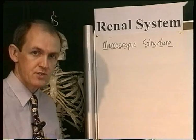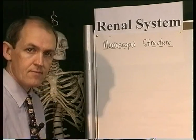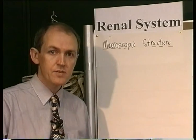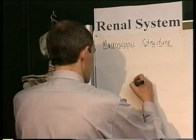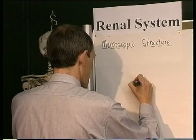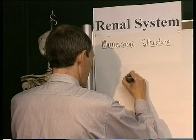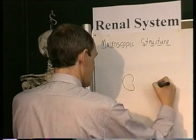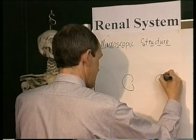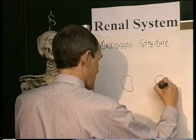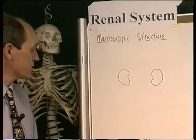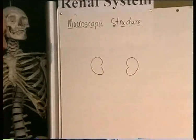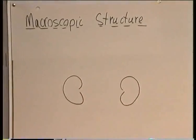Macroscopic just means it's big enough to see. Build the diagram up with me. Let's start off by drawing two kidneys — these are bean-shaped organs located near the back in the abdominal cavity.